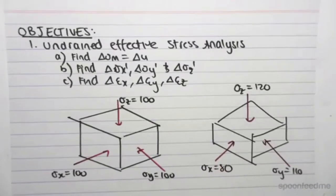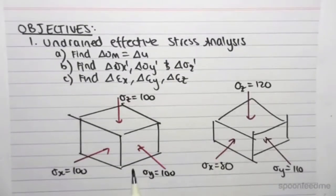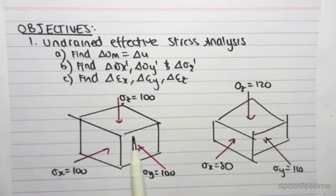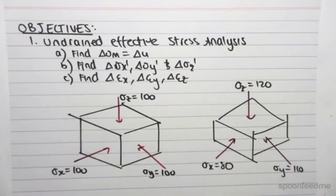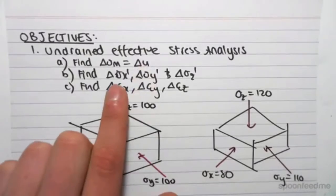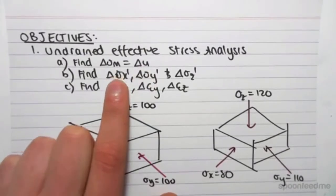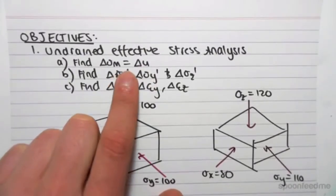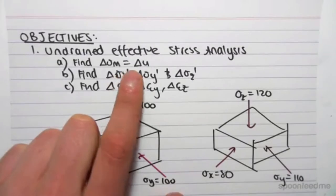As you can see, it's the exact same example we did before. We had all of the stresses equaling 100 kPa, and then they increased and decreased in different directions. The first thing we need to do, because we're doing an effective stress analysis, is find the effective stress changes. But to first do that, we're going to have to find the change in the pore water pressure.